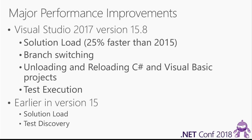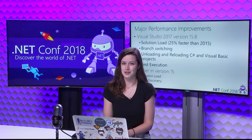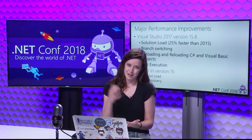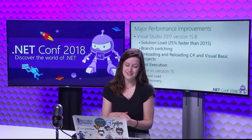Something we also focused on improving performance for is branch switching. That can really interrupt your development flow if you're not able to switch between branches really quickly, so we are focusing on that. We also focused on unloading and reloading C# and Visual Basic projects, making that a lot faster. We also focused on the testing teams as well as test execution.